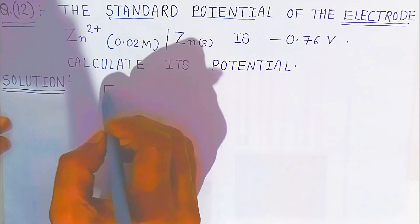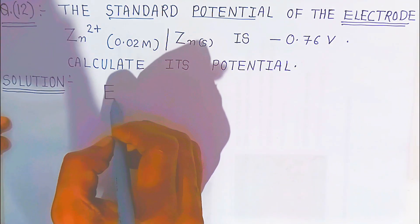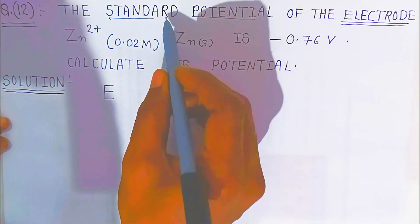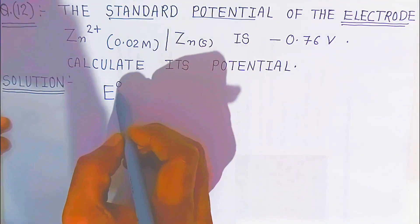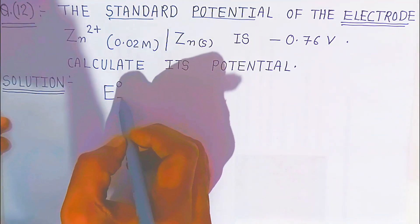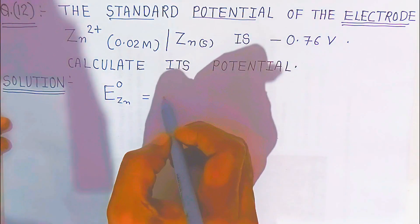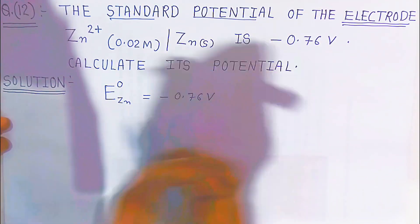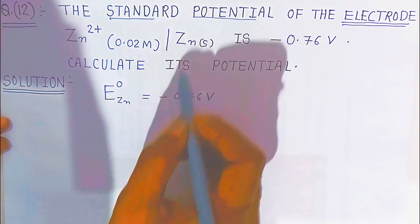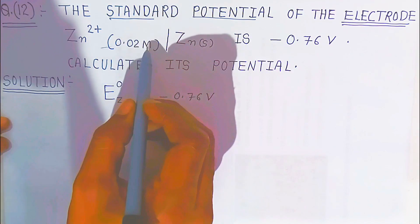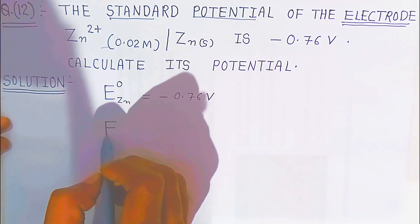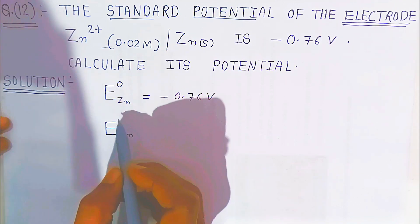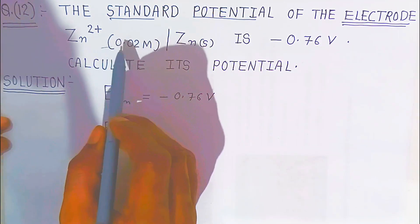The electrode potential we are representing with capital E. What is given is the standard potential, for which we use E° with a zero superscript. The standard electrode potential of zinc is given as minus 0.76 volt. We have to find the potential E of zinc — without the zero — when the concentration is 0.02 molar.